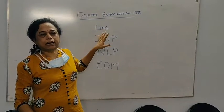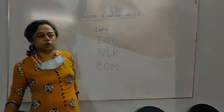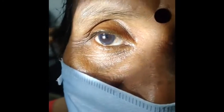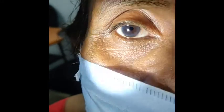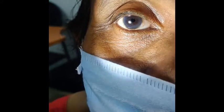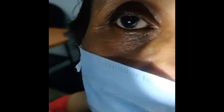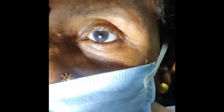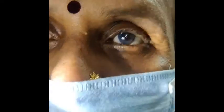Mature and immature cataract was shown to you previously. Today I will show you pseudophakia. This is a pseudophakic patient. You can see the black color but shimmering. In both eyes she has a lens. Can you see the shining reflex in the pupillary area?